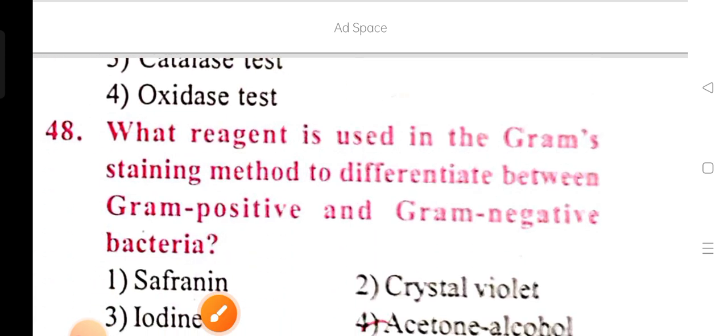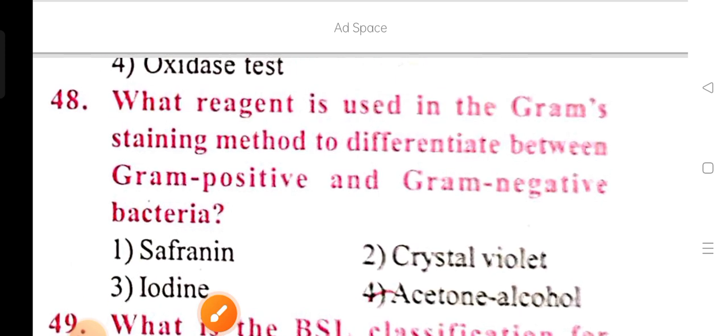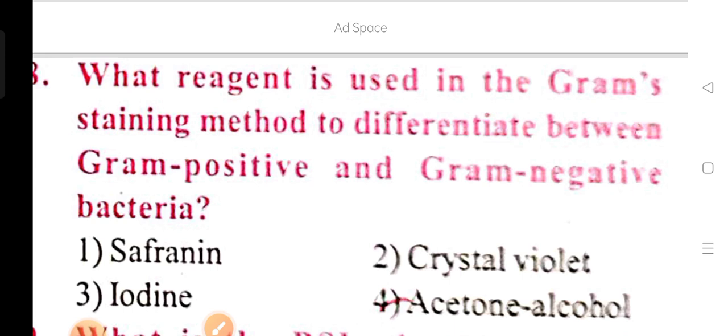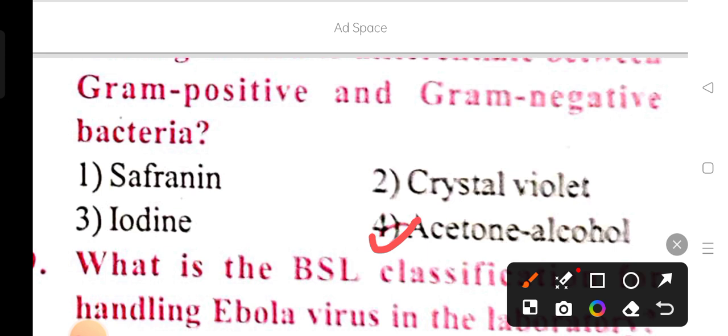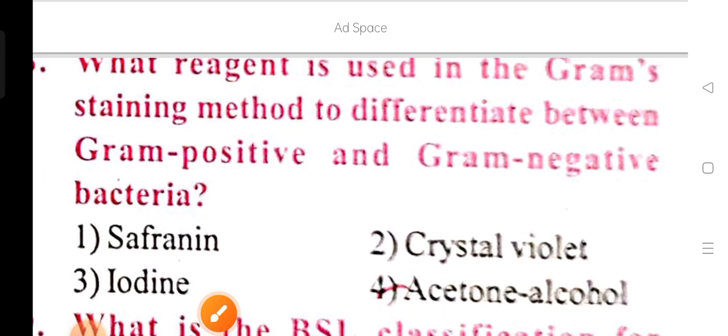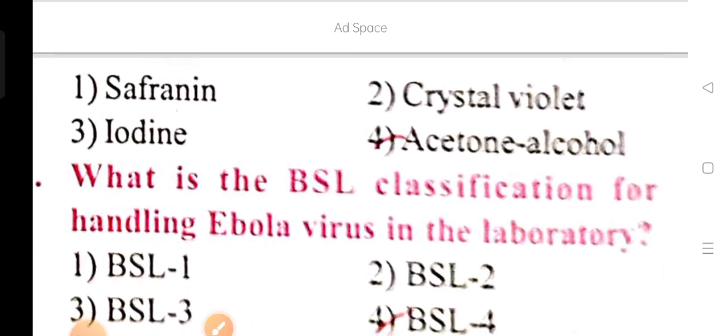What reagent is used in the Gram staining method to differentiate between gram positive and gram negative bacteria? Which reagent is used in the Gram staining method? Options are safranin, crystal violet, iodine, and acetone alcohol. Option 4 is the correct answer: acetone alcohol is used as a reagent in the Gram staining method.